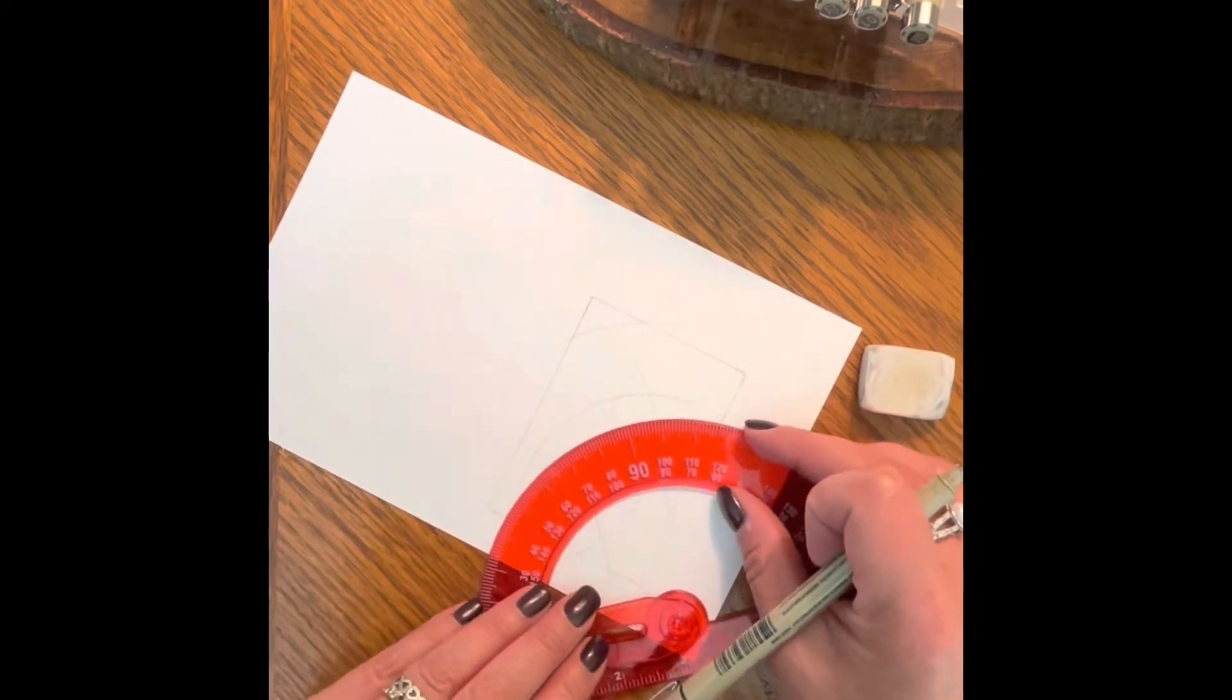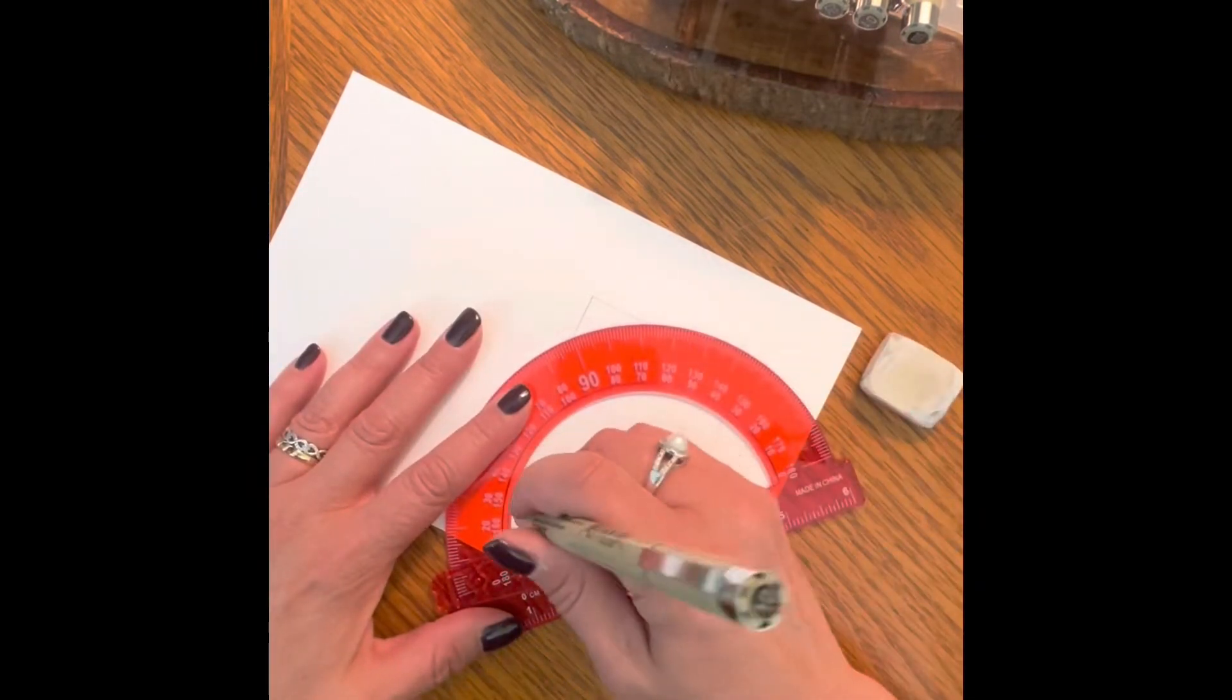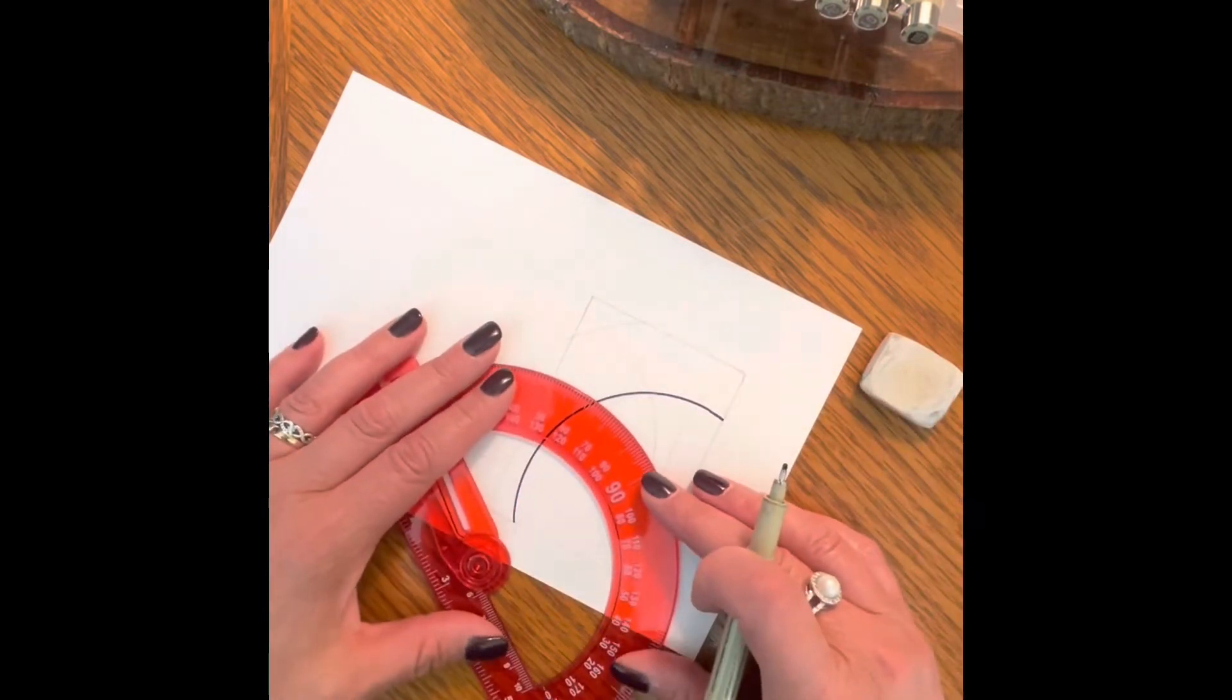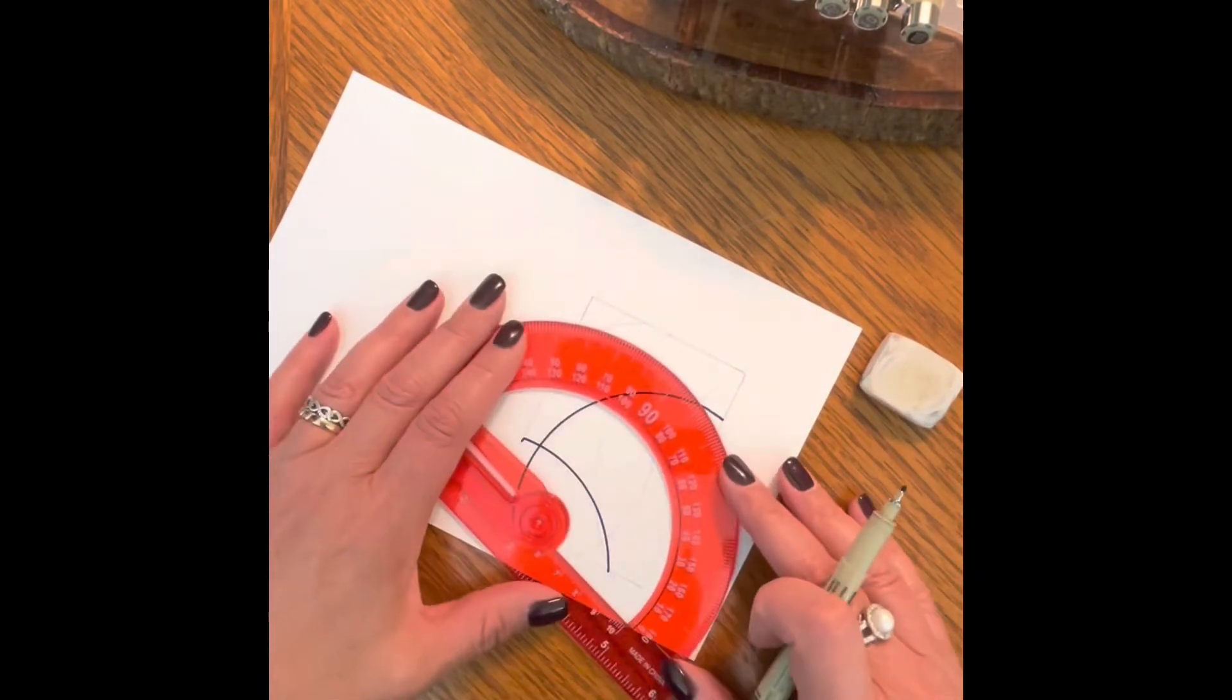Once I've got my design the way I like it, I'm going to trace over those curves with a nice black pen and make the design really come forward.